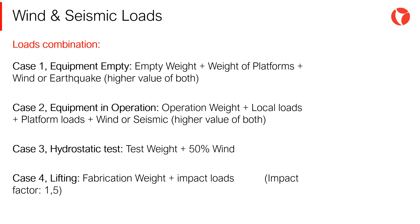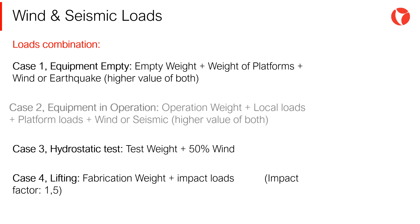Load combinations should be analyzed for each project according to the requirements of the process and external loads: earthquake, hydrostatic tests, transportation, etc. A pressure vessel must be checked for each of these load combinations and the supports will be designed with the worst case of all of the above. Usually, the equipment in operation together with the earthquake requirement is the governing case—case 2. Although, there are exceptions.